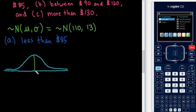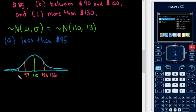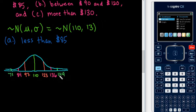The normal curve is always centered at the mean, so we center it at $110. Going one standard deviation in each direction, we add or subtract 13. Going out two standard deviations gives us $136 on the right and $84 on the left. At three standard deviations, anything less than $71 or more than $149 in this city is extremely uncommon.